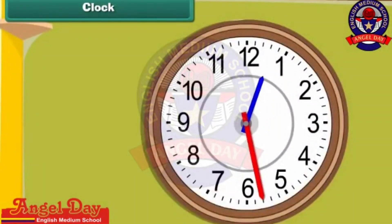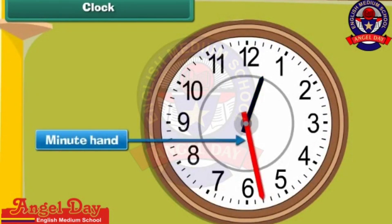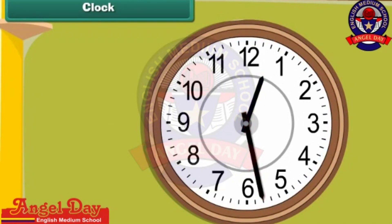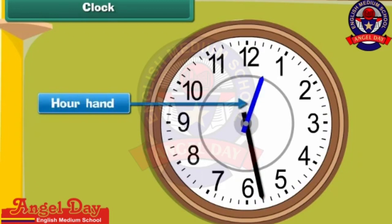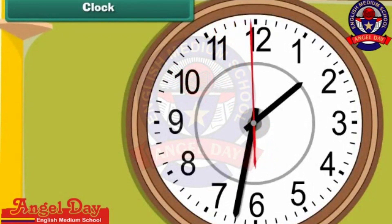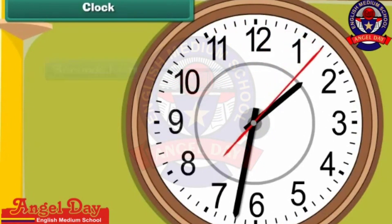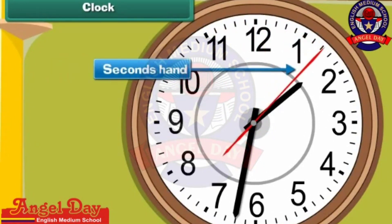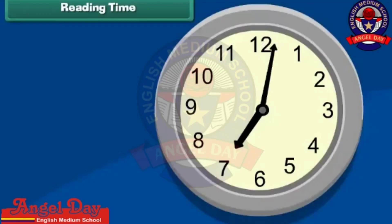The clock has two hands. The longer hand is called the minute hand, and it indicates time in minutes. The shorter hand is called the hour hand, and it indicates time in hours. Some clocks have a third hand — it is the thinnest and the longest hand in the clock. It is called the seconds hand, and it indicates time in seconds.